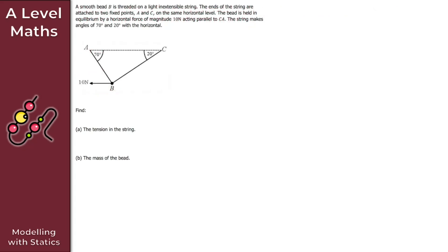Let's take a look at this practice question for modeling with statics. We're told that smooth bead B is threaded on a light inextensible string. The ends of the string are attached to two fixed points A and C on the same horizontal level. The bead is held in equilibrium by a horizontal force of magnitude 10 newtons acting parallel to CA, and the string makes angles of 70 degrees and 20 degrees with the horizontal. The question asks us to find two things: for part A, we want to find the tension in the string.